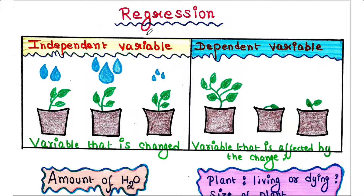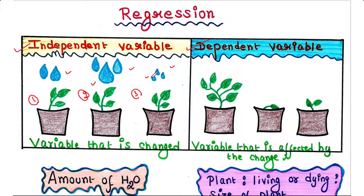In statistics there are two types of variables: independent variable and dependent variable. Look at this picture — here we have three plants: plant one, plant two, and plant three. We are watering them. In the first plant we are applying a moderate amount of water, in the second plant we are applying a large amount of water, and in the third plant we are applying very less amount of water. Now we want to determine the effect on these three plants.